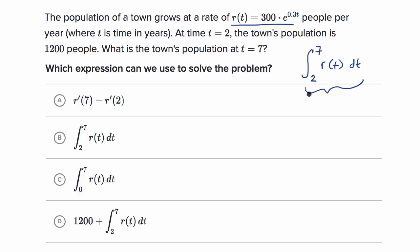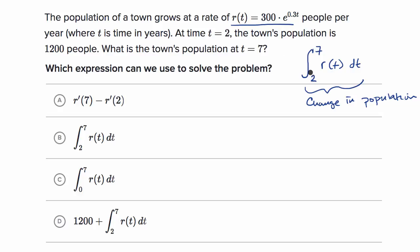This integral gives us the change in population. But they're not asking for the change in population — they want to know what the town's population is at T is equal to seven. So what you would want is the population at T equals two, plus the change in population from two to seven.